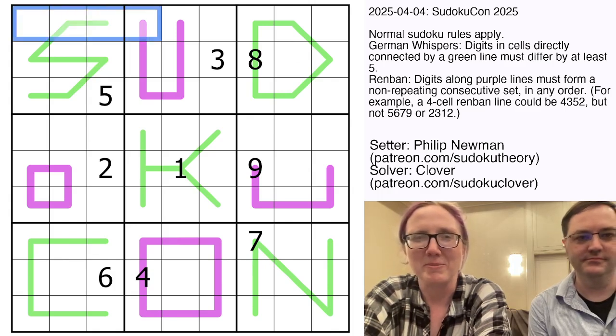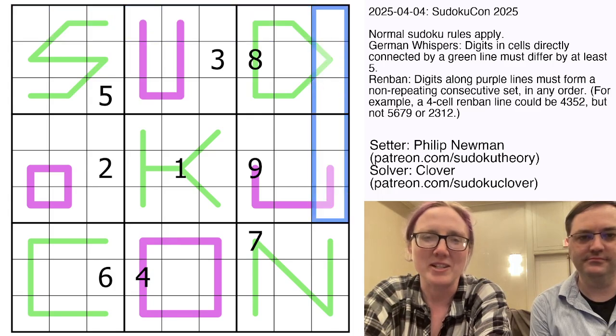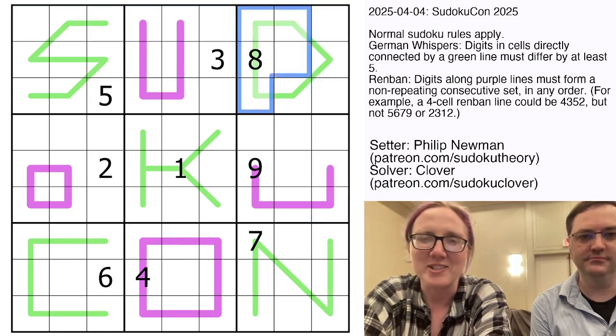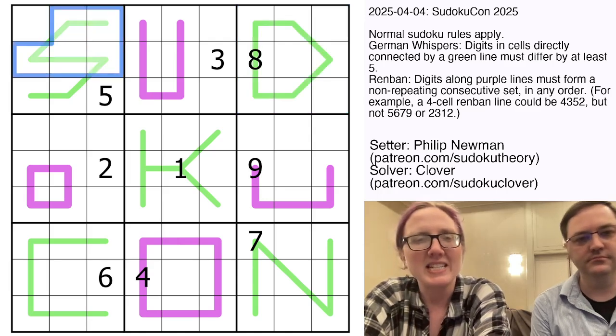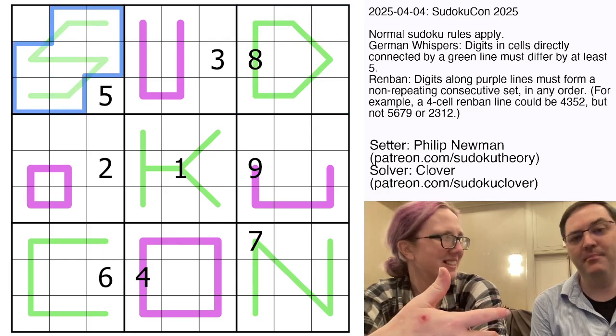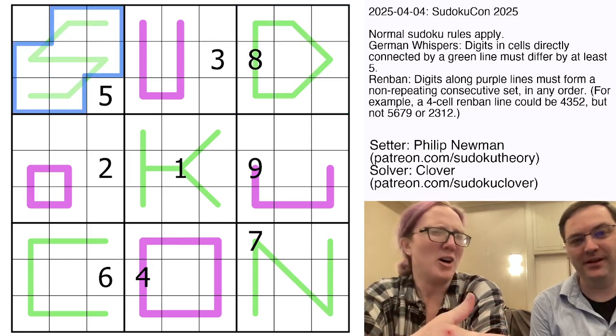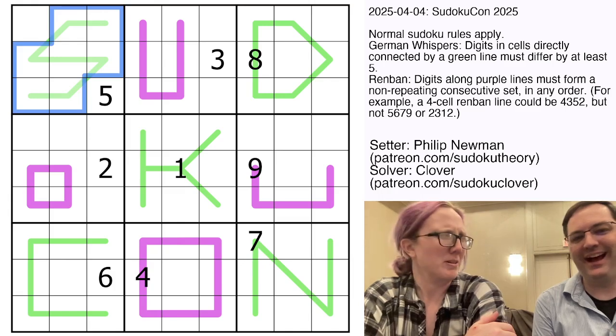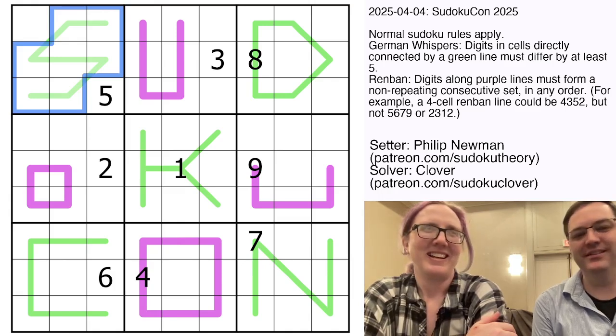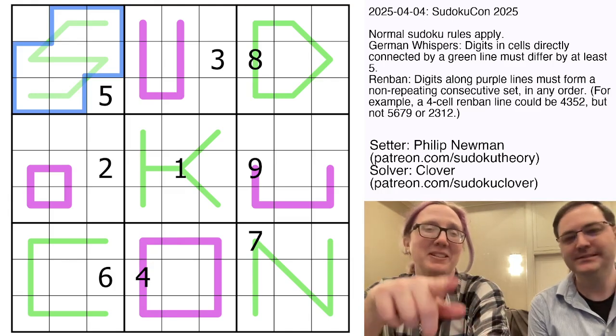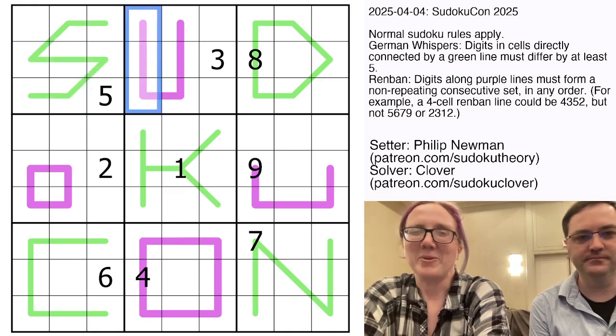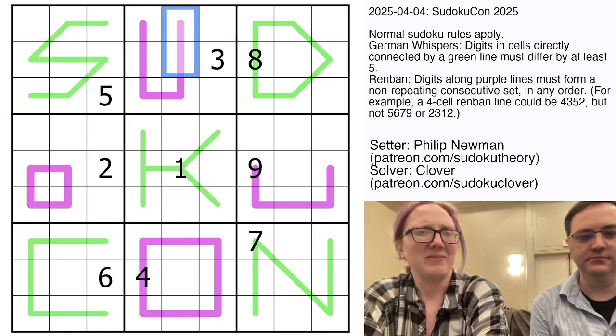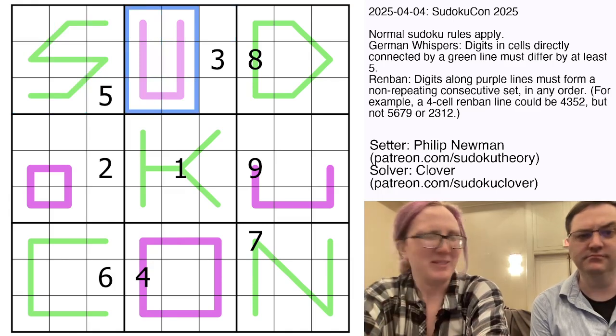This is our SudokuCon 2025 themed Renbon slash German Whisper Sudoku. We have standard Sudoku rules, placing the digits one through nine once each in each row, each column and each heavily outlined region. And then there are also some green and what do you call this color? I put it as purple. Oh, that's not even a little purple.